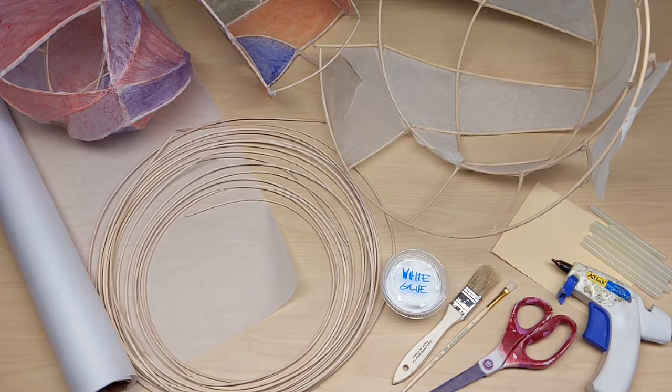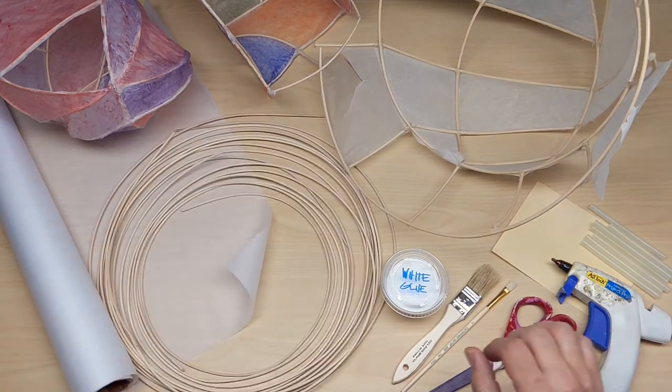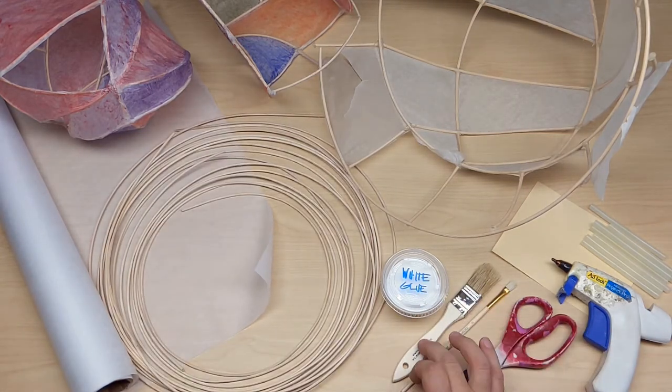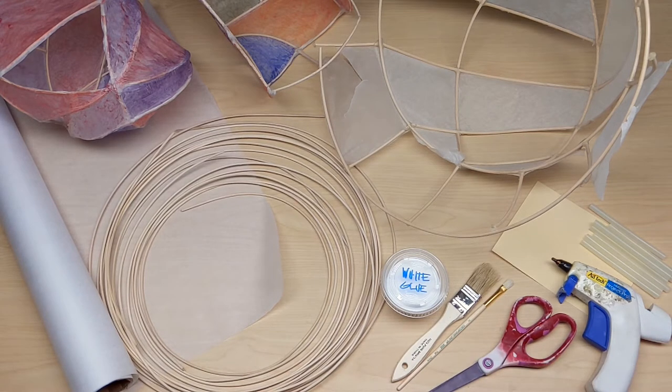These are the steps for building your reed and paper structure. Materials we have: 40 feet of reeds, tracing paper, white glue, a couple of brushes for later, scissors for cutting the reeds, and a hot glue gun.